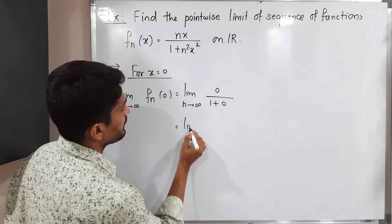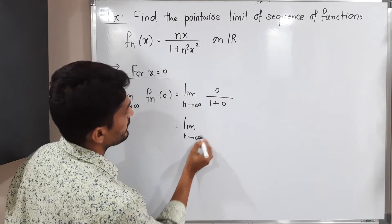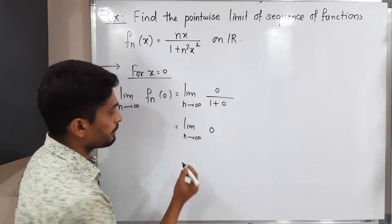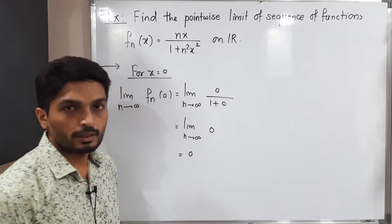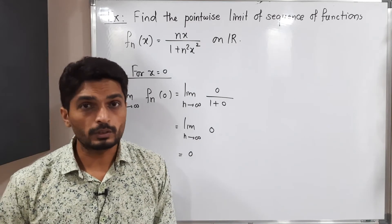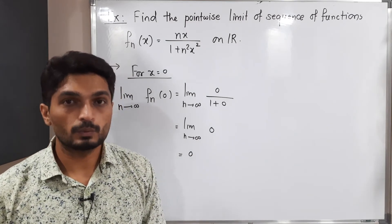So this is equal to limit as n tends to infinity. Basically we are having 0. If you apply the limit to 0, you will have 0. That means if x=0, the limit of that sequence is 0.